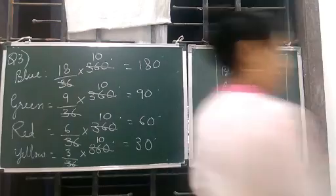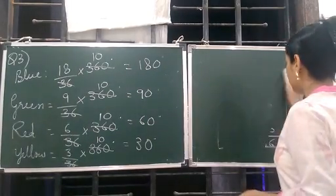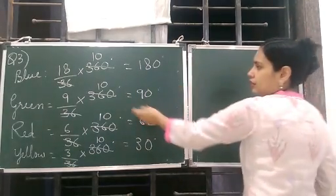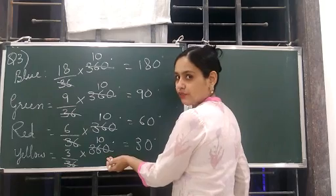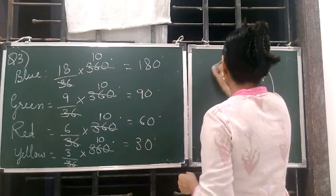Very simple. Very simple. Now we will draw the pie chart. Because we got the fraction, then multiply it with 360 to find the angle. So here is the diagram.